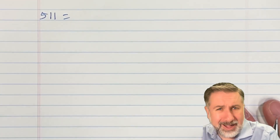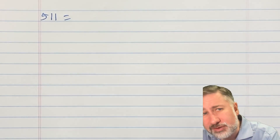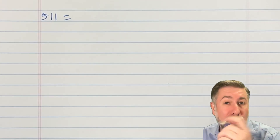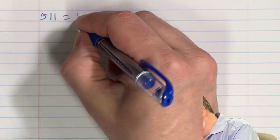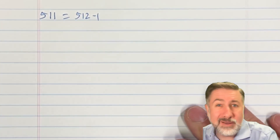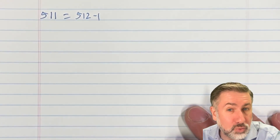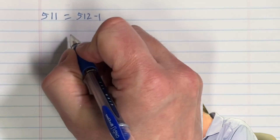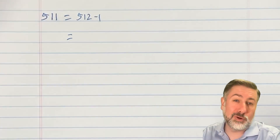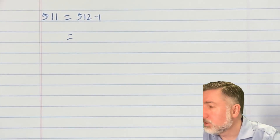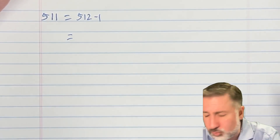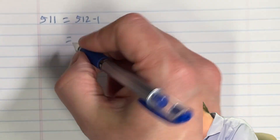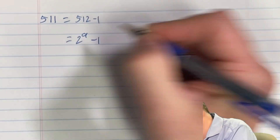So 511 — what is that value in binary? You could do divide and shift repeatedly, or you could recognize that this equals 512 minus 1, and we know that 512 is a power of 2. Since 1024 is 2 to the 10, then 2 to the 9 is 512. So 511 is 2 to the 9 minus 1.